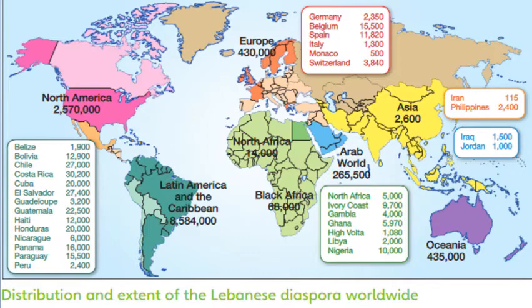This slide is about a case study of Lebanon. Lebanon is a country known for its population being spread all over the world. The word 'diaspora' is used on page number 160. Diaspora means spread. This picture clearly tells you how many Lebanese people are spread all over the world. In North America, around 2.5 million Lebanese people are settled there, having migrated due to wars and internal conflicts.